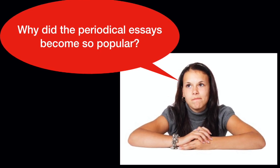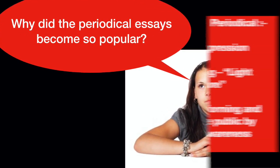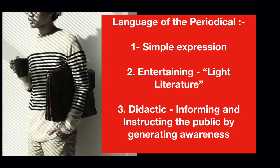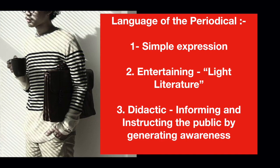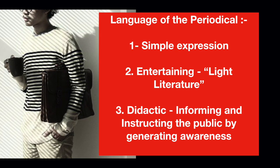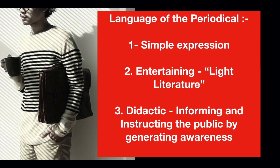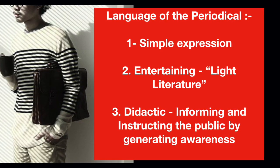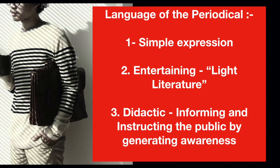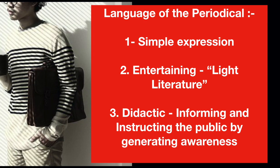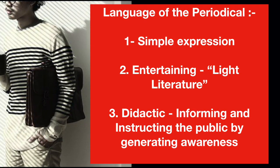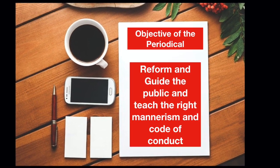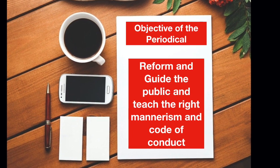The next question is why did the periodical essays become so popular? They were popular mainly because of the simple expression used — an ordinary day-to-day expression that anybody would use in common usage, which is why the language was very easy to understand. The second aspect was that they were very entertaining, since you learned about so many things around your social environment, which is why these periodicals were also called light literature. And lastly, they were didactic — informing and instructing the public by generating awareness about what was happening around them and what they needed to reform in their behavior. So altogether, the objective of the periodical was to reform and guide the public and teach the right mannerism and code of conduct.